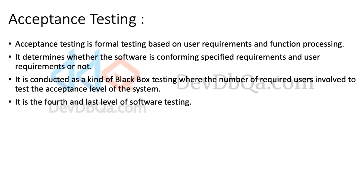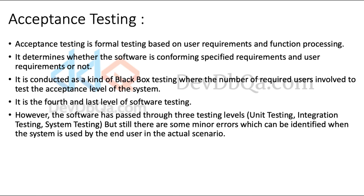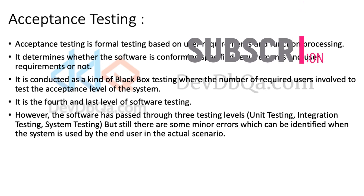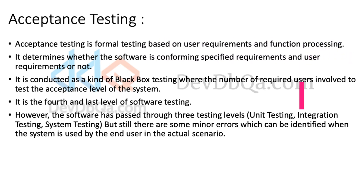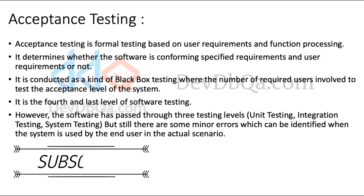Acceptance testing is the fourth and last level of software testing. The software has already passed through three testing levels: unit testing, integration testing, and system testing. However, there are still some minor defects or errors that can only be identified when the end user tests the system in the actual scenario in which the software will be used. Therefore, acceptance testing is the fourth level of testing performed.